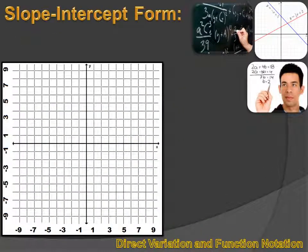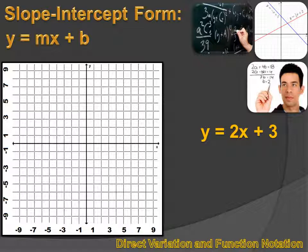You should all be familiar at this point with slope-intercept form. That's just y equals mx plus b, where m is the slope of the line, and b is the y-intercept. Here's an example: y equals 2x plus 3. If we graph that, our y-intercept would be 3, and our slope would be 2, or positive 2. It's a rise of positive 2, and a run of 1.